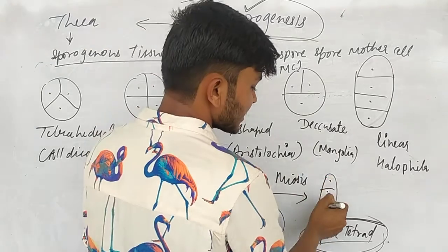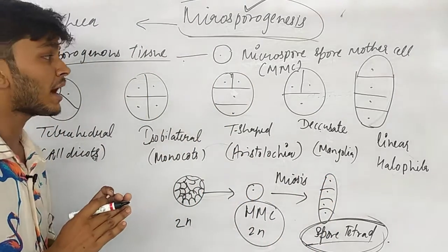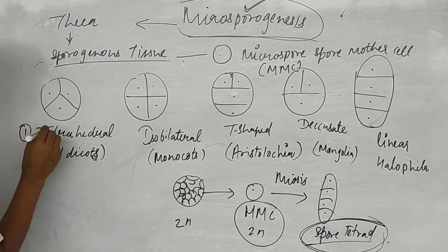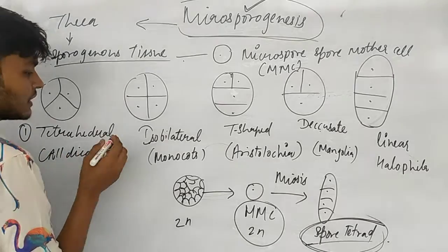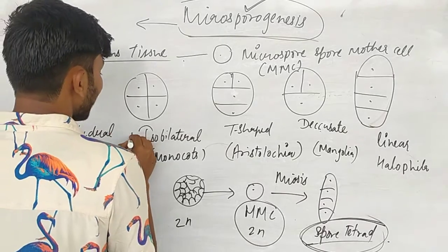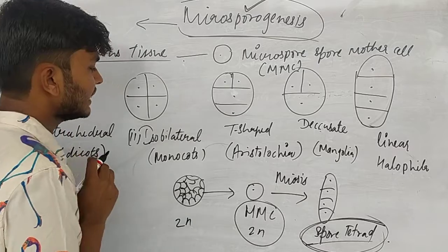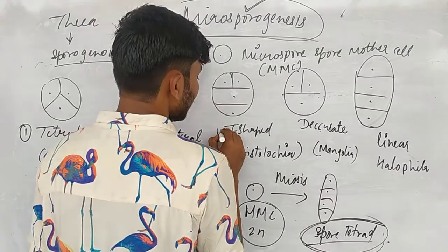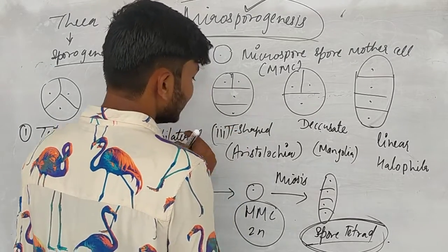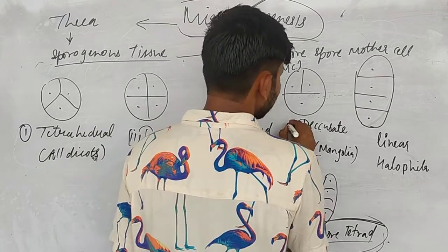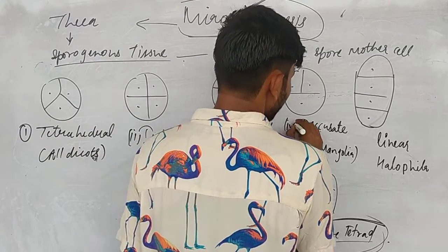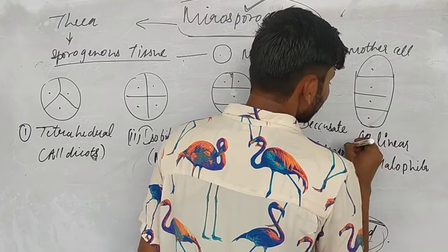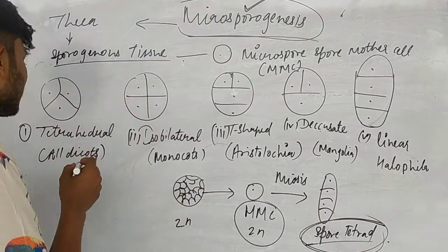The spore tetrad has four spores and can be classified into five categories: number 1 is tetrahedral, number 2 is iso-bilateral, number 3 is T-shaped, number 4 is decussate, and number 5 is linear.